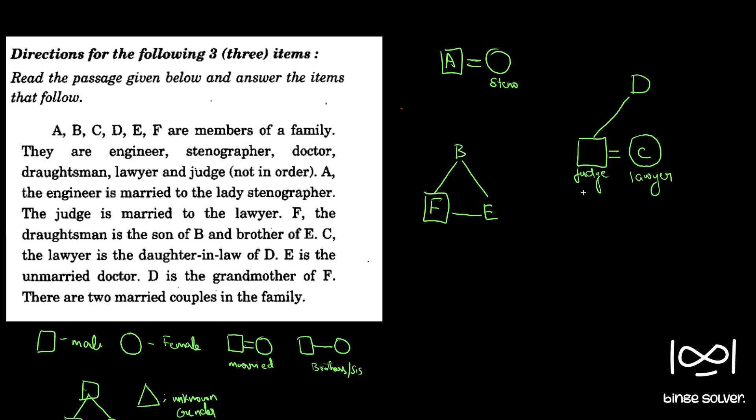E is the unmarried doctor. This is doctor, unmarried doctor. And F was given as draughtsman. We got these three information. It was given F the draughtsman is the son of B.